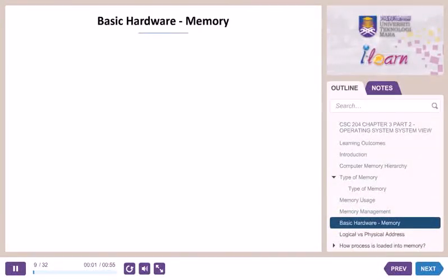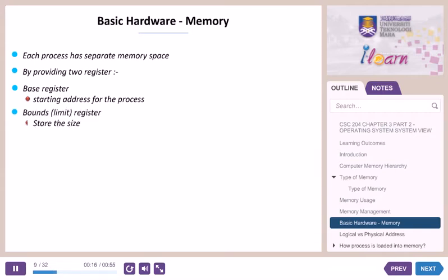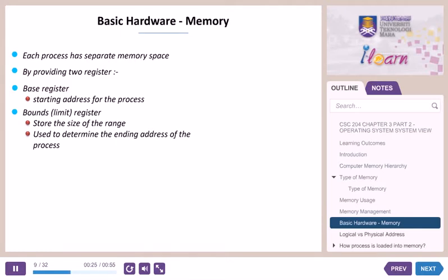Basic hardware memory. Each process that has been loaded into memory has a separate memory space. It provides two registers: the base register, which holds the starting address for the process, and the bounds (limit) register, which stores the size of the range and is used to determine the ending address of the process. The base and limit registers are loaded by the OS via special privileged instructions.